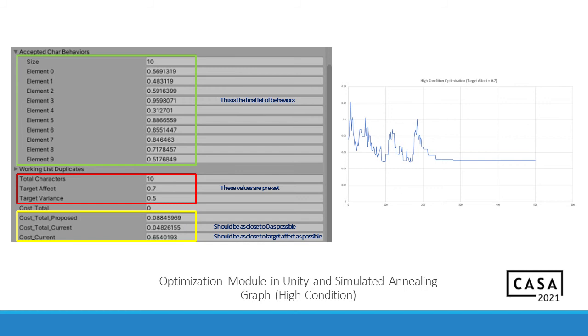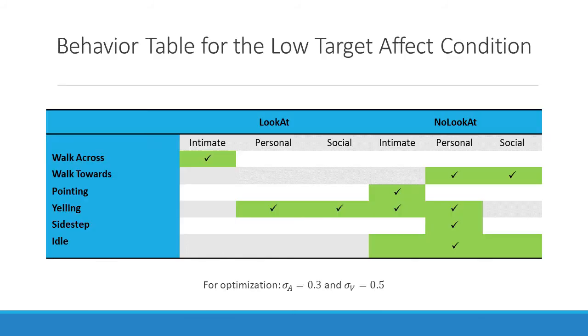Here is the final behavior table for the low target effect condition. As you can see here, the tick marks are the ones that were selected for the simulation. Most of them are in the no-look-at part, which correlates with some of the background research that we did in our literature review. The optimization target that we wanted for the low scene to be achieved was 0.3. And we kept the variance same for all of them at 0.5.